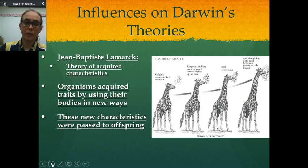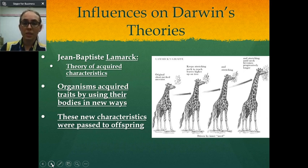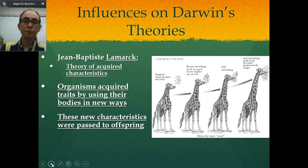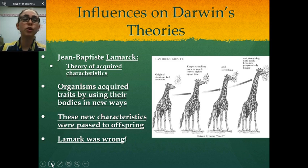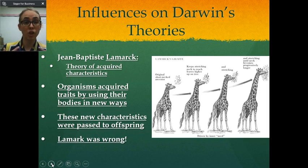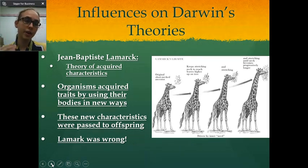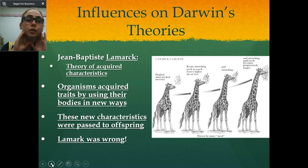Jean-Baptiste Lamarck was another scientist at the time who had developed a theory of acquired characteristics. Looking at the picture of the giraffe, he said that organisms acquired new traits by using their bodies in different ways, and then those traits were passed on to offspring. Basically, what he was saying is if you were to stretch your neck, your child would be born with a longer neck, and eventually we'd have just really long necks.